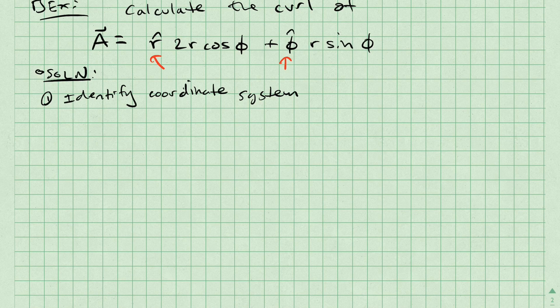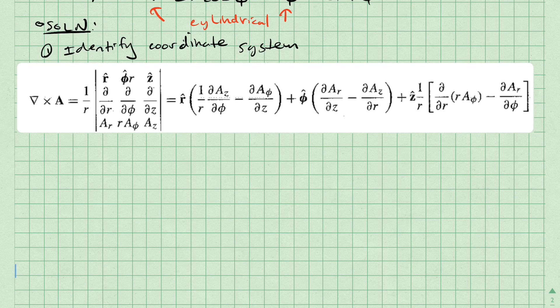Looking at the given vector field, the lowercase r-hat and phi-hat make it apparent that we are working in cylindrical coordinates. The equation for cylindrical coordinates is copied here for our reference.